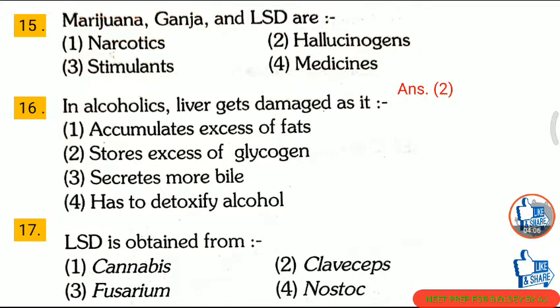Question 16: In an alcoholic, the liver — first, accumulates excess fat; second, accumulates acid; third, stores excess glycogen; fourth, secretes enzymes to detoxify alcohol. The correct answer is option 1: accumulates excess fat. Question 17: LSD is obtained from — first, cannabis; second, Claviceps; third, Fusarium; fourth, non-stop. The correct answer is option 2: Claviceps.